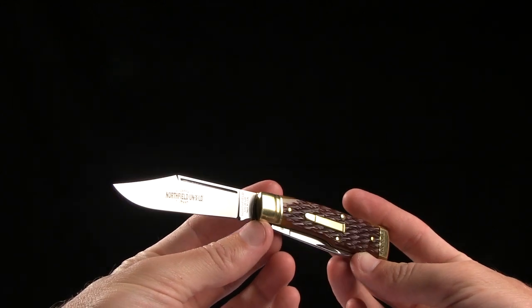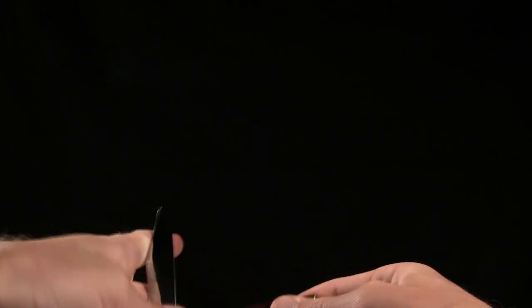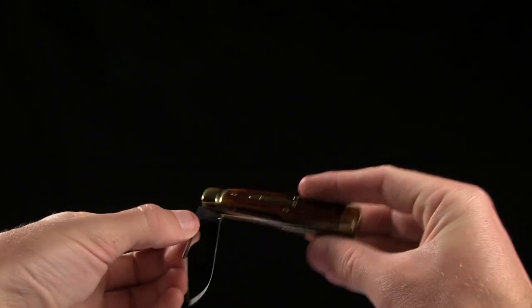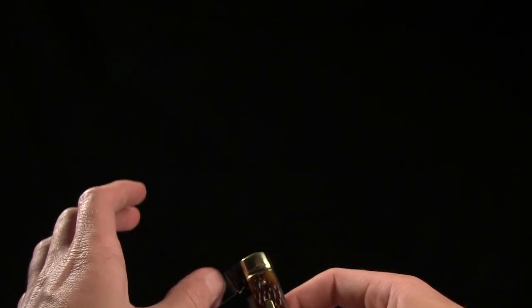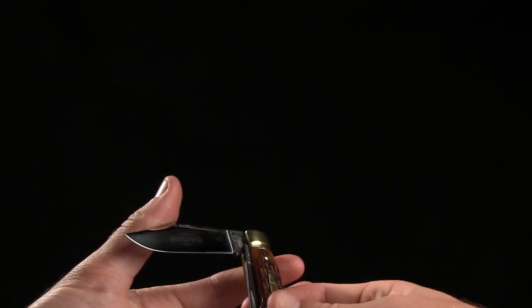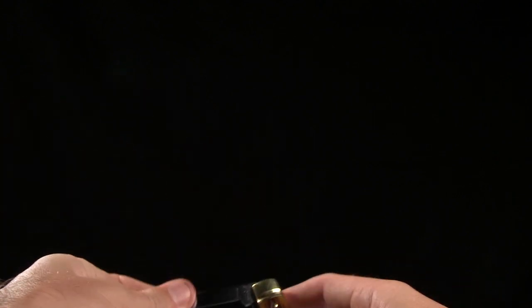This version is the Northfield Unexceled version with the Autumn Jigbone. So you've got your primary blade there with the clip point. Note that on the Northfields, the Unexceled, they pretty much pull out all the stops, give it a mirror polish, that sort of thing.